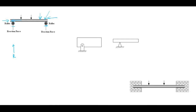For the line diagram of a roller-supported beam, I draw a horizontal line, represent the roller supports with reactions R1 and R2, and mark the forces acting on it. In this case it is a point load, so I mark only the arrows.